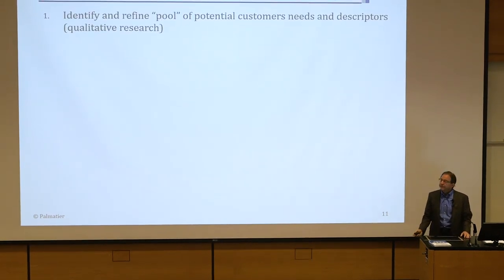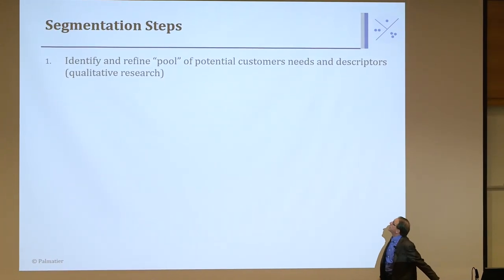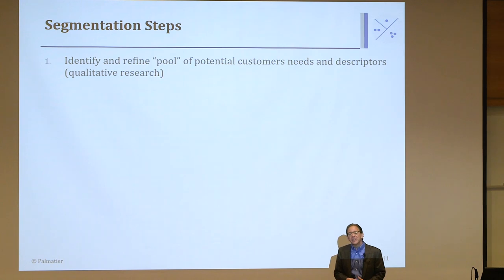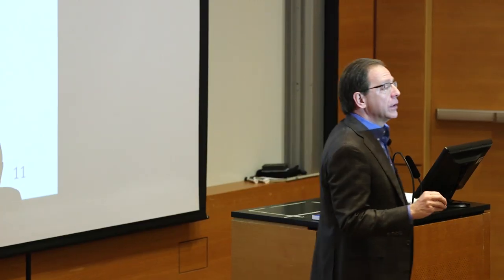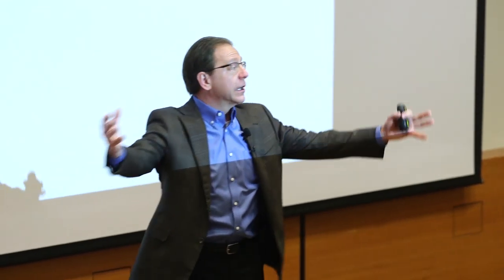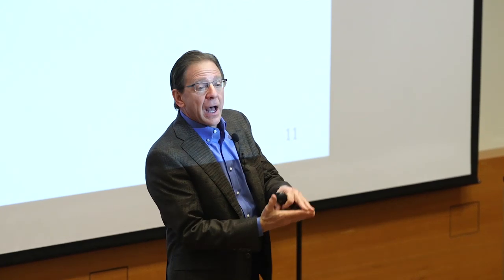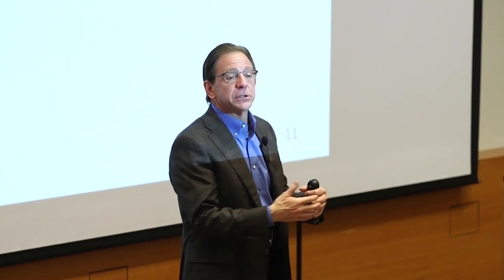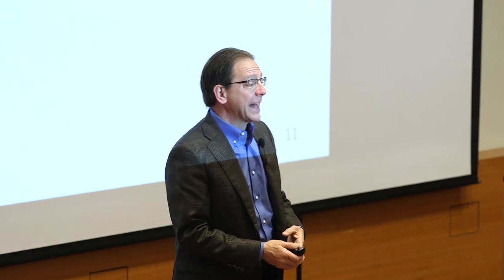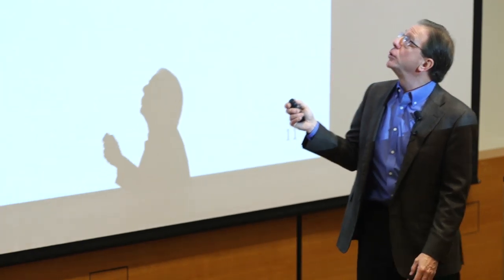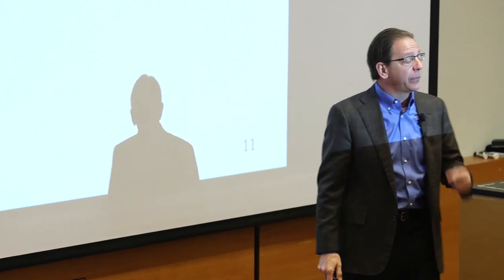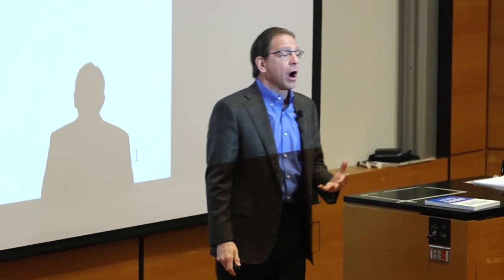The steps of segmentation: first, identify and refine a pool of potential customer needs. Sometimes you don't even know all the attributes customers use to make a decision. We do qualitative research — focus groups or interviews — asking automotive users what things they look at when deciding to buy a car: size, performance, cost, color, space. We list all those attributes. If we leave out an important one, our analysis will be faulty. Second, we collect data from a random assortment of potential customers.